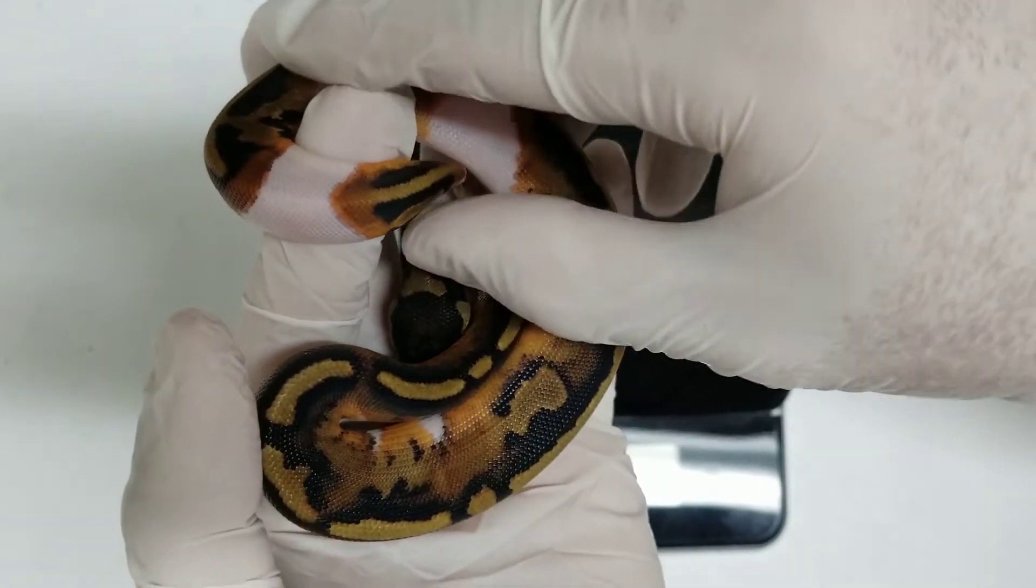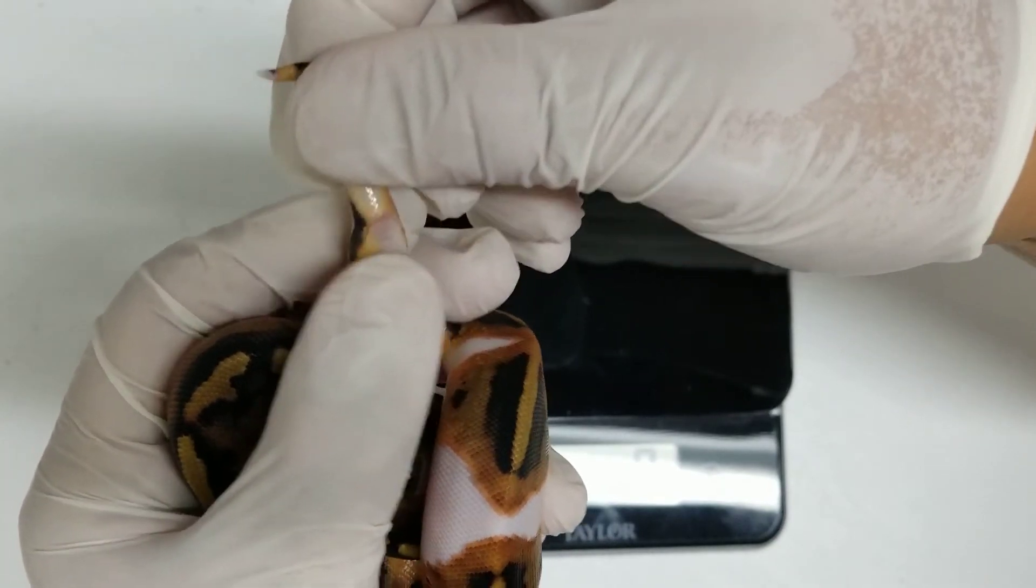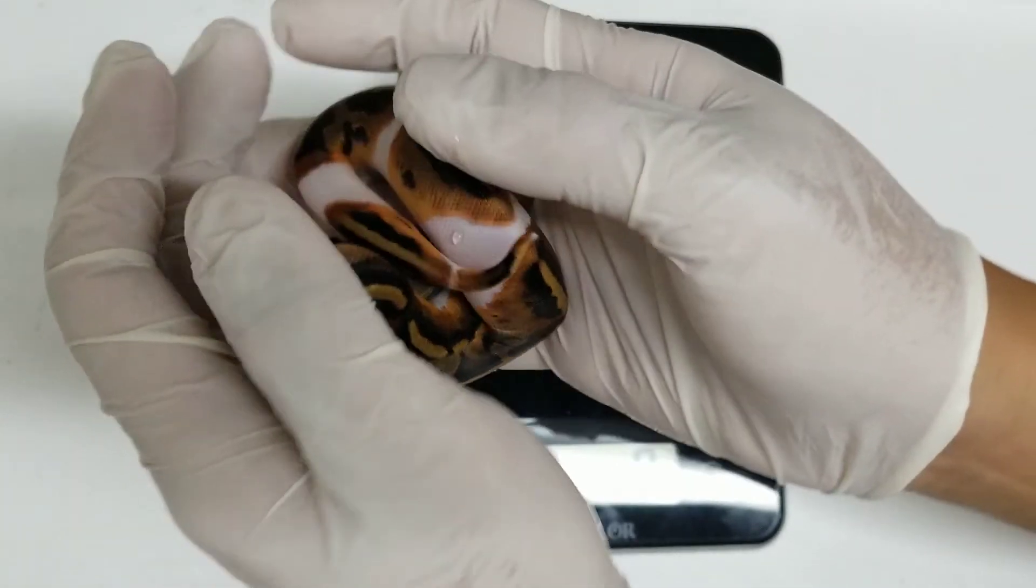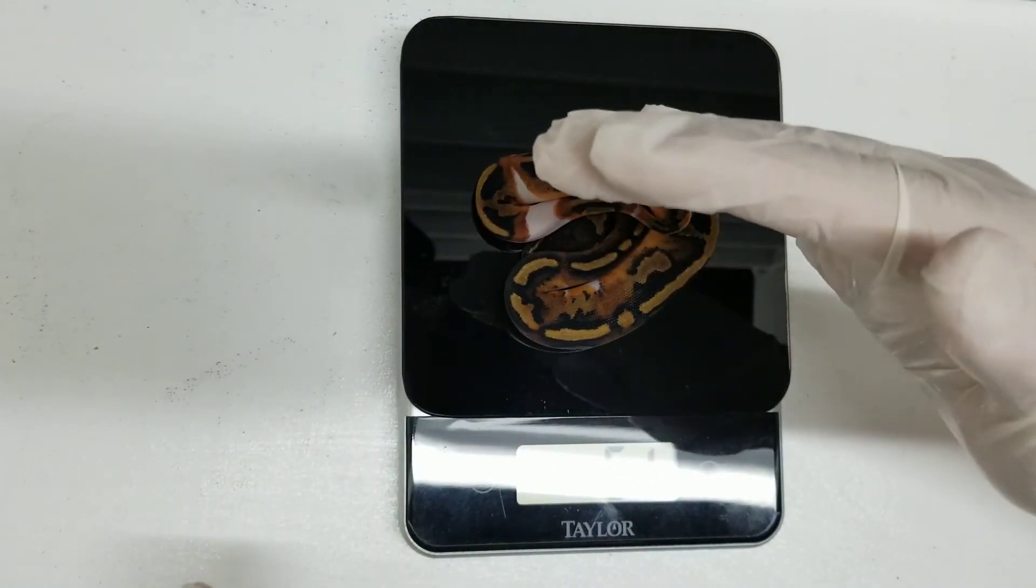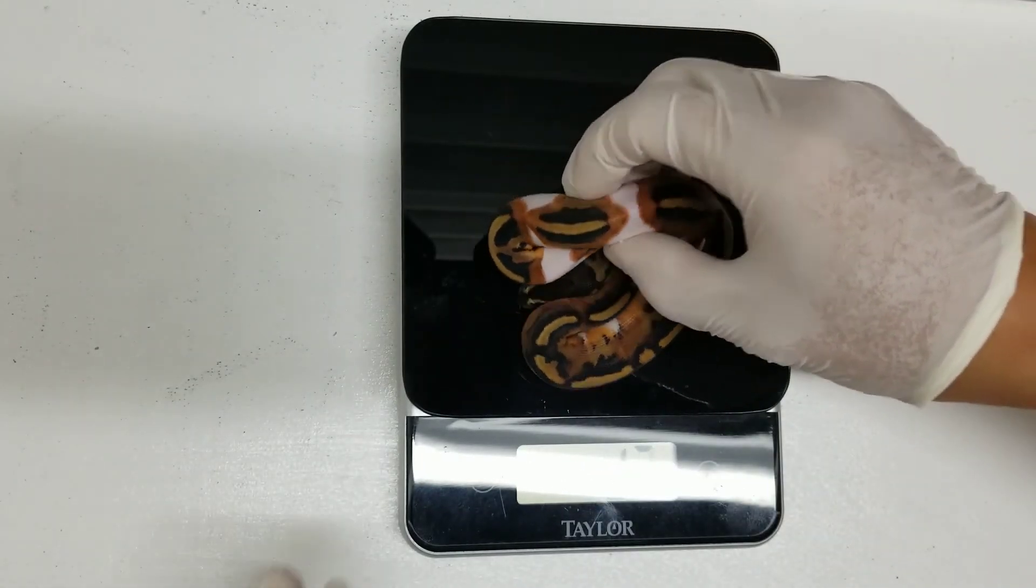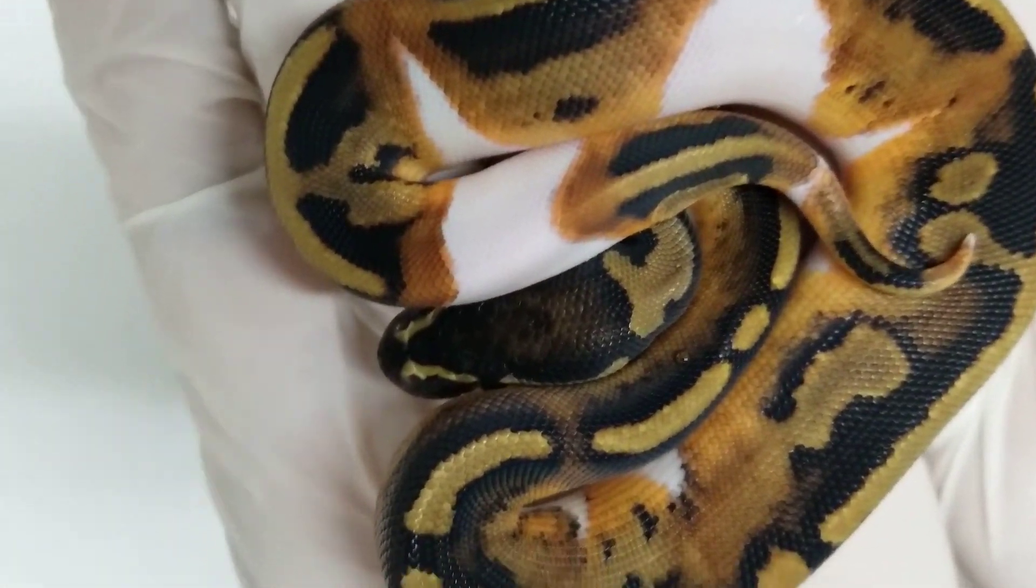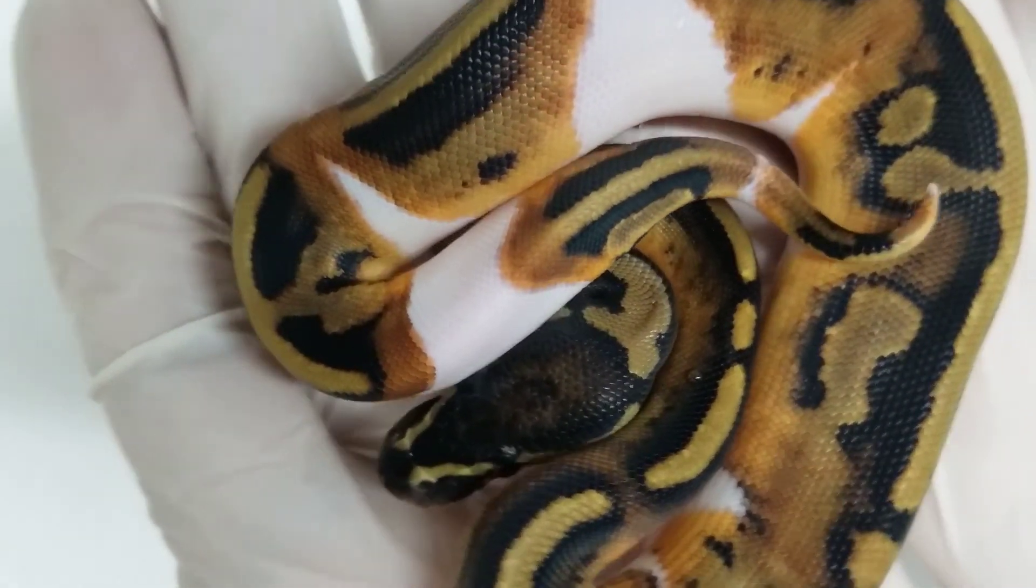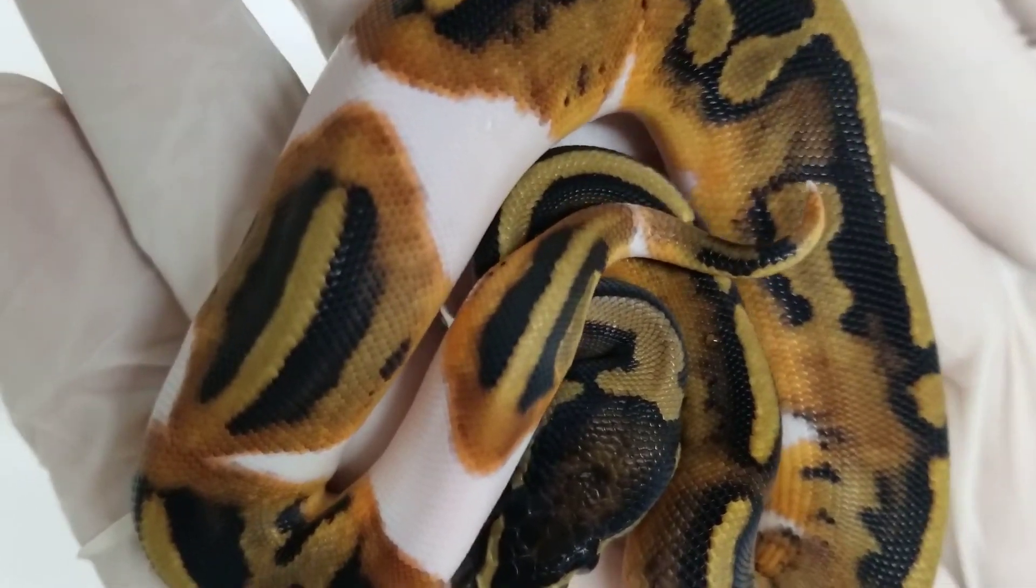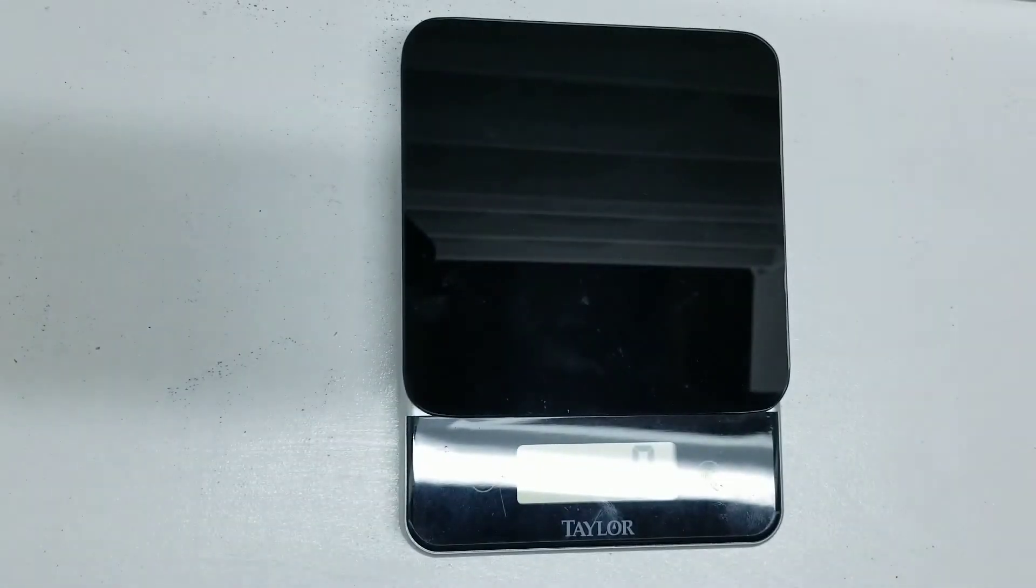So this one should also be a female. And looks like it's still holding true. Go ahead and weigh this little girl. 57 grams. I'll show you this girl one more time. Just look at the amount of orange on this one. That's very pretty. And that's why I like the low white pieds because you get a lot of the pattern, you got a lot of the color. Alright, I'm going to put this one away, we'll get to the next one.